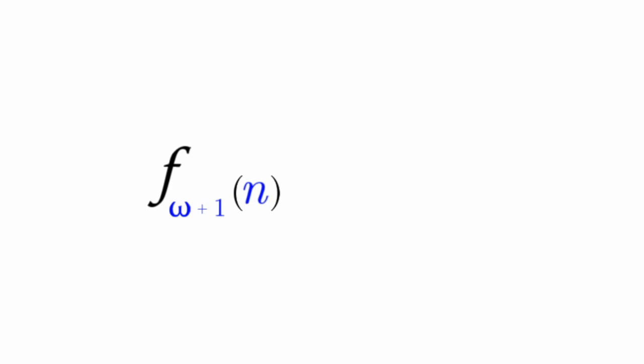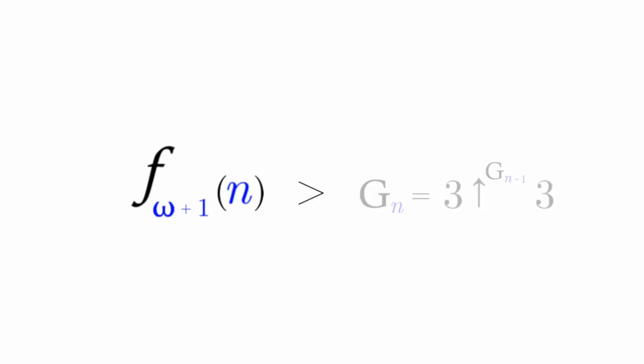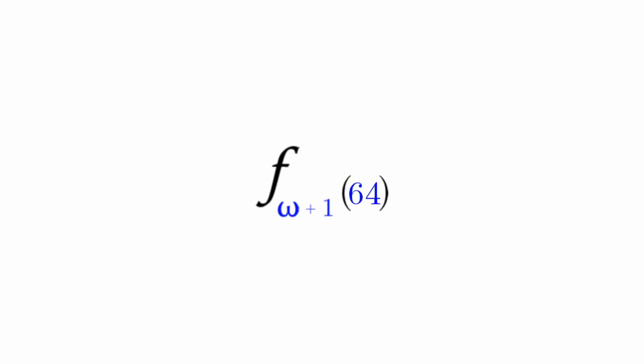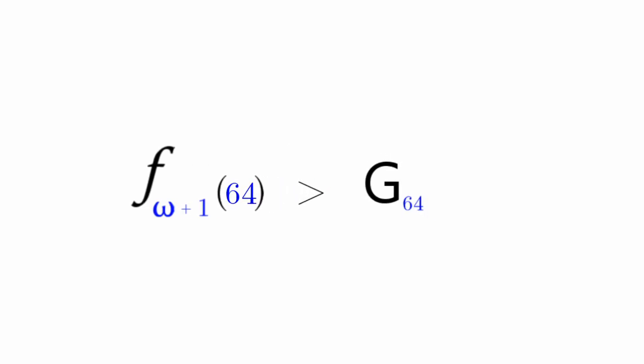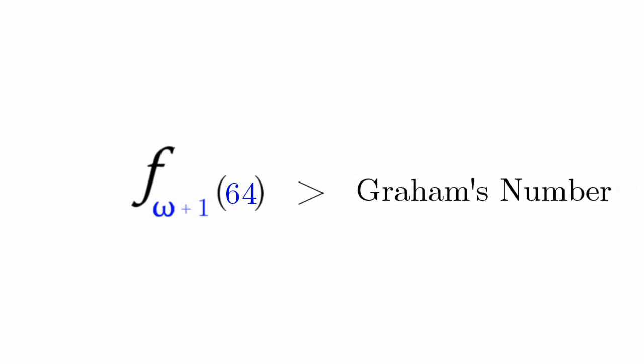Now that we know how our ordinals are counted, let's get back to the fast-growing hierarchy. F(omega+1) of 64 is a lot bigger than G64, which is also known as Graham's number.